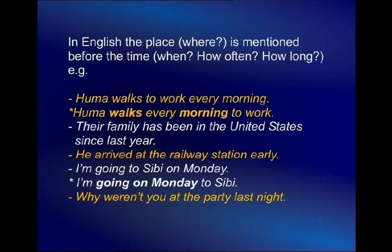Do not write 'he arrived early at the railway station' — it is the place that has to be mentioned first, and the time, how often, and how long follow after. Another example: 'I'm going to Sibi on Monday' — Sibi is a city in Balochistan. The right order is the place first and then the time: 'I'm going to Sibi on Monday.' Another one: 'Why weren't you at the party last night?' — again the place is mentioned first and the time follows.